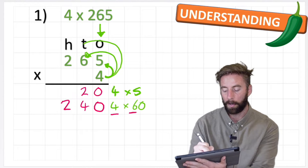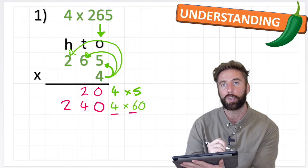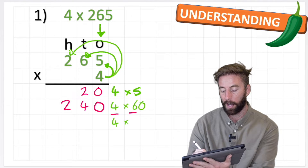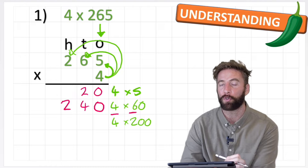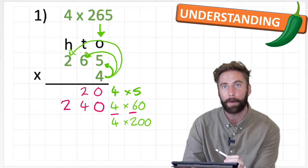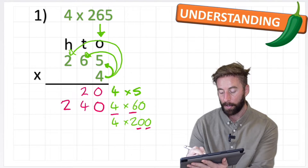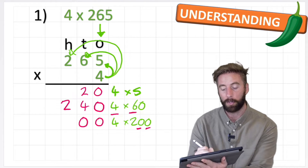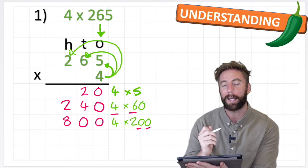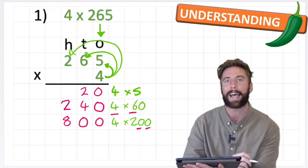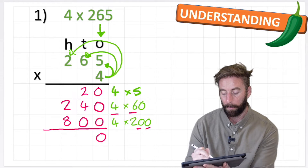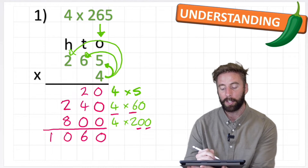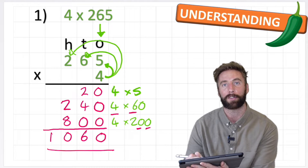Now the last part: 4 times 2, but it's in the hundreds column so it holds the value of 200. So my question is 4 times 200. I count my placeholders — 1, 2 — put those in place, then simply do 4 times 2 which is 8. Now I add everything up: 0 plus 0 plus 0 equals 0; 2 and 4 equals 6; 2 and 8 equals 10. So my answer to 4 times 265 is 1,060.